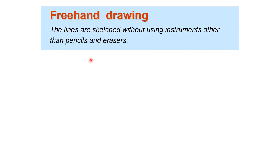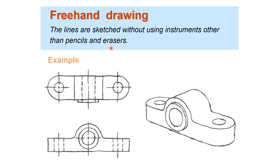Freehand sketch: the lines are sketched without using instruments other than pencils and erasers. Here is a sketch of an object showing the top view and the front view.